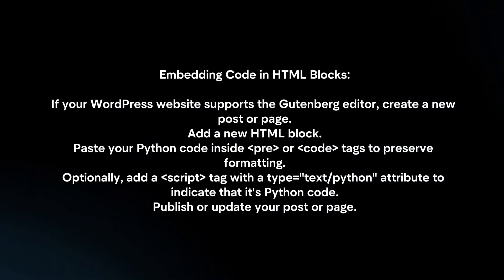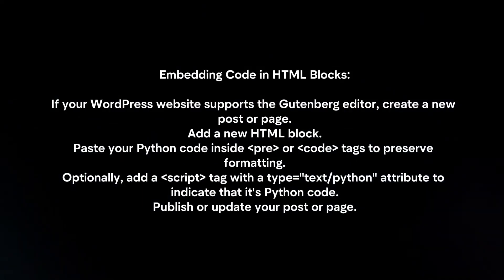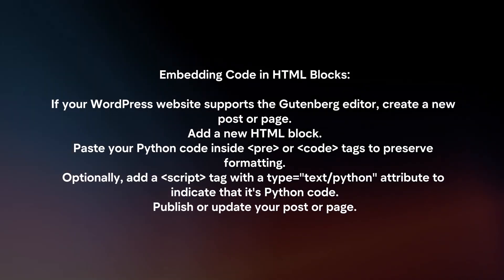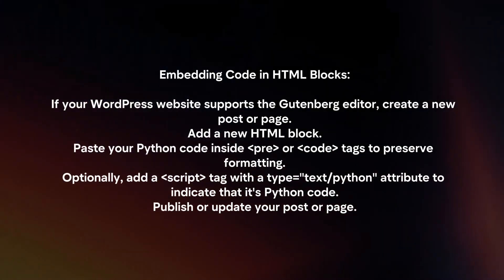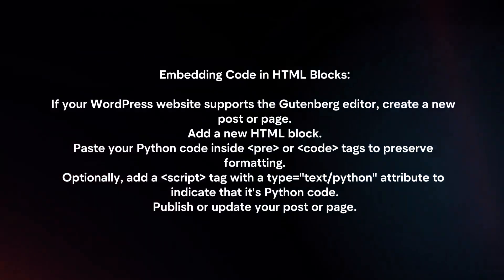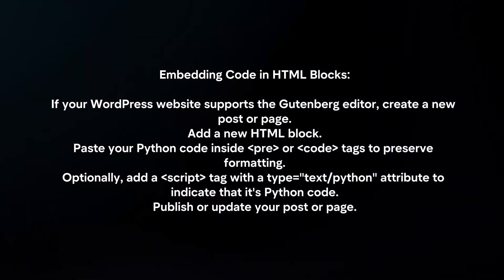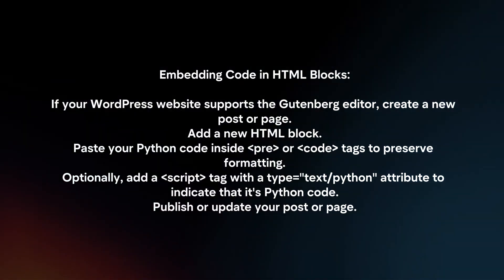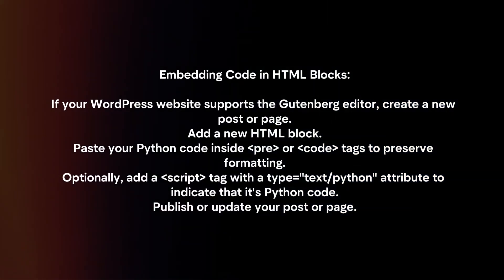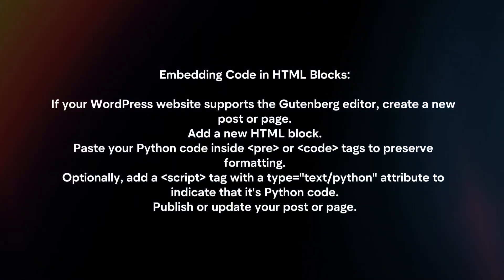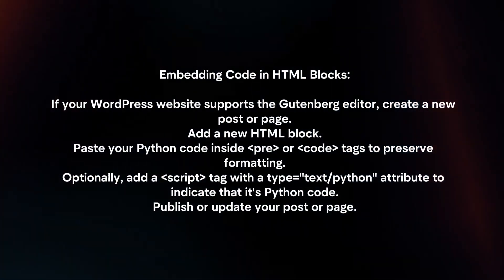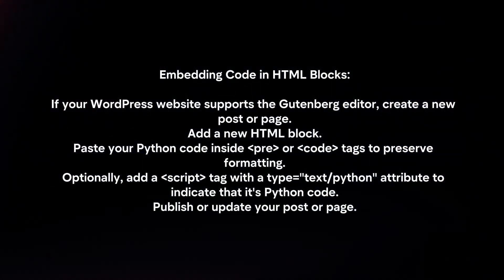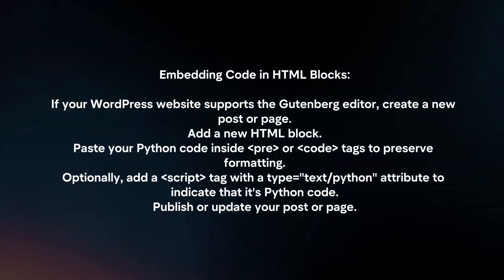Embedding code in HTML blocks: if your WordPress website supports the Gutenberg editor, create a new post or page. Add a new HTML block, and paste your Python code inside pre or code tags to preserve formatting.